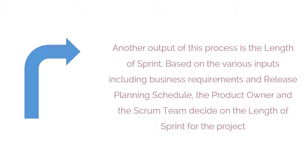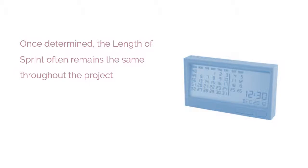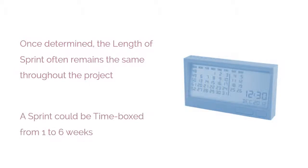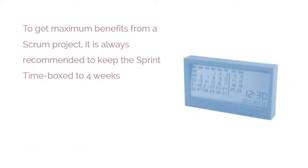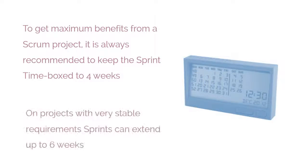Another output of this process is the length of sprint. Based on various inputs including business requirements and the release planning schedule, the product owner and the Scrum team decide on the length of sprint for the project. Once determined, the length of sprint often remains the same throughout the project. A sprint could be time-boxed from one to six weeks. However, to get maximum benefit from a Scrum project, it is always recommended to keep the sprint time-boxed to four weeks. On projects with very stable requirements, sprints can be extended up to six weeks.